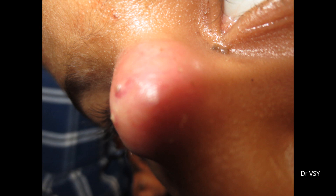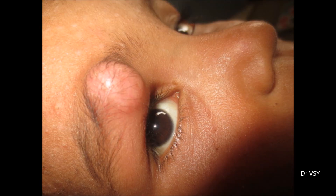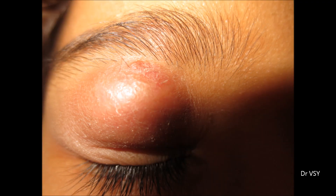Here you can see an abscess present on the eyebrow. This is the abscess present on the eyelid, and later in the video we will show you one more abscess which is a very severe case, having inflammation of the eye as well.